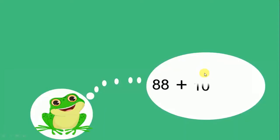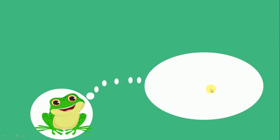88 plus 10: 8 plus 0 equals 8, 8 plus 1 equals 9. We have 98. Now subtraction: 88 subtract 10. 8 subtract 0 equals 8, 8 subtract 1 equals 7. We have 78.